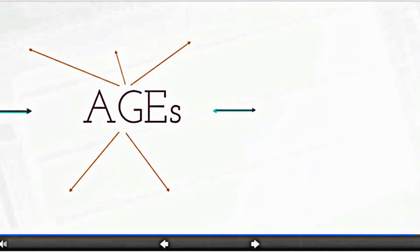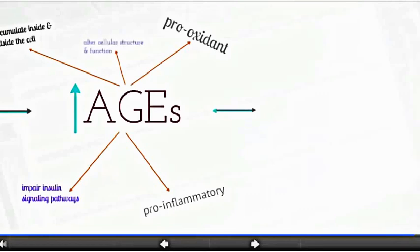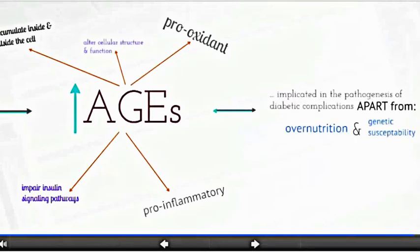Up to this point, accelerated AGE formation and accumulation in diabetes has been demonstrated to activate inflammatory and pro-oxidant mechanisms, impair cell signaling pathways, accumulate inside and outside the cell, and alter cellular structure and function, apart from overnutrition or genetic susceptibility.